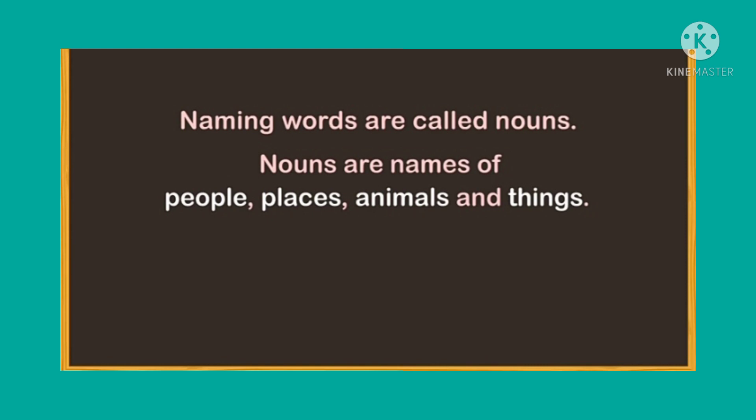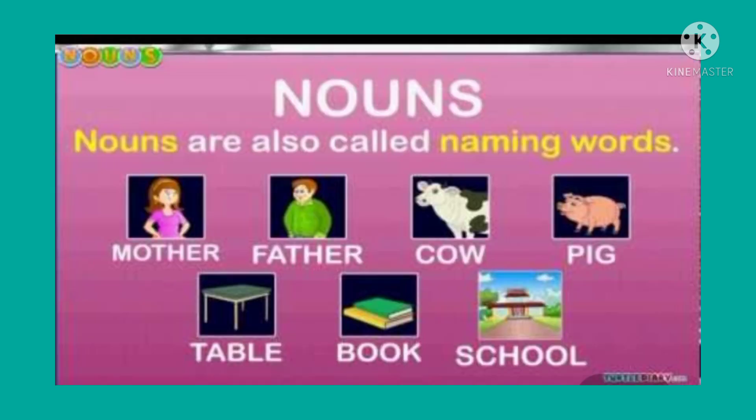Children, do you know what are nouns? Nouns are the names of people, places, animals and things. Nouns are also called naming words. Everything that we see around us has a name, so naming words are called nouns. Mother, father, doctor, pilot, teacher are the names of people. School, park, hospital, etc. are the examples of names of places.